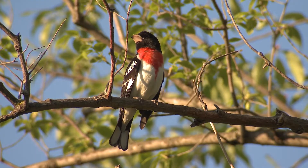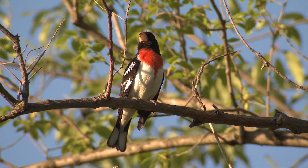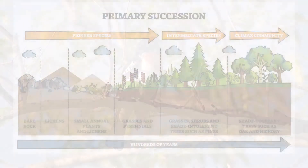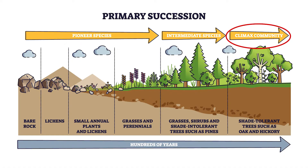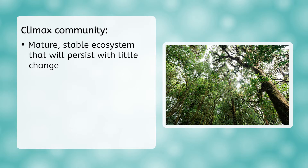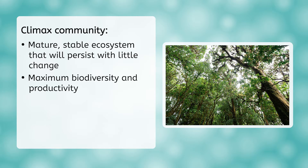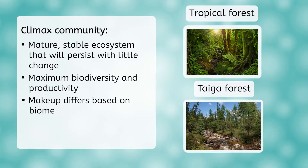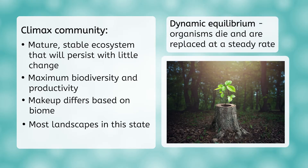As these intermediate species begin to thrive, more habitats become available for animals, such as birds, mammals, and insects. The last step of primary succession is the climax community. The climax community is the mature, stable ecosystem that will persist with very little change unless some type of disturbance occurs. The ecosystem has now reached its maximum potential in terms of biodiversity and productivity. The makeup of the climax community will differ based on the biome, but you can think of climax communities as the way you envision a landscape looking in a particular biome. Most of the landscapes you see around you are already in this state. The climax community exists in what is known as dynamic equilibrium — organisms die and are replaced by new growth at a steady rate.